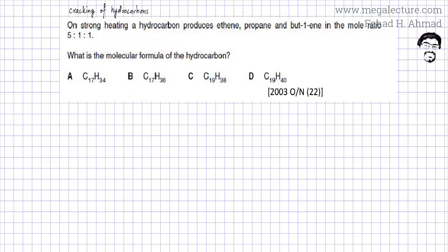The following question reads that on strong heating, a hydrocarbon produces ethene and propane. Let's underline that. It produces - the hydrocarbon is cracking basically, it's producing all these compounds and the mole ratio of these hydrocarbons are also given.